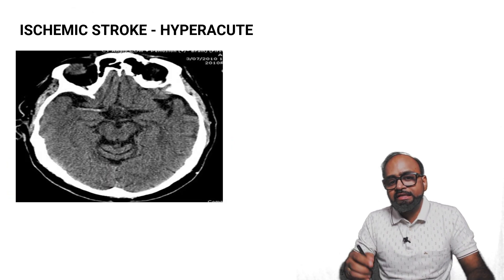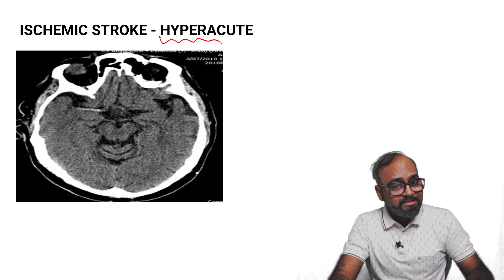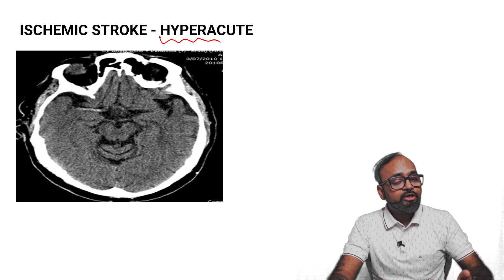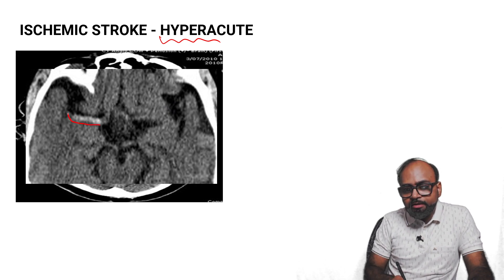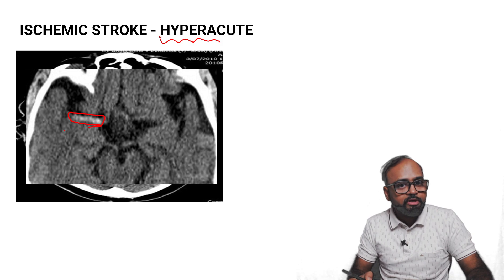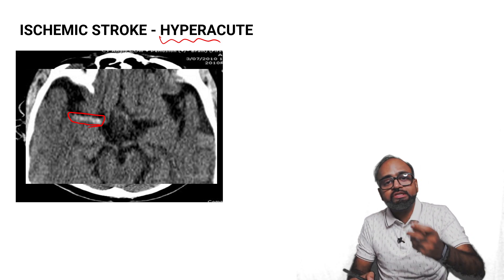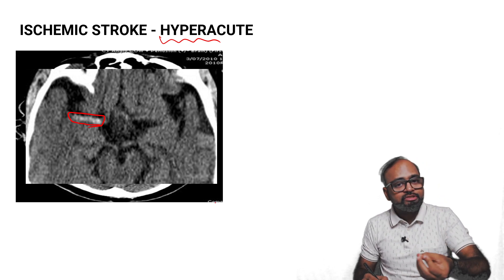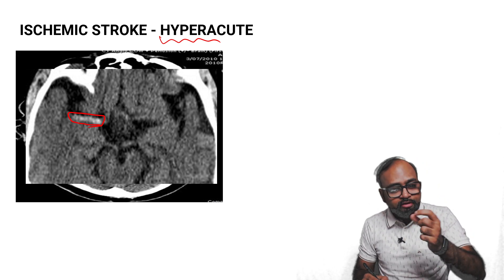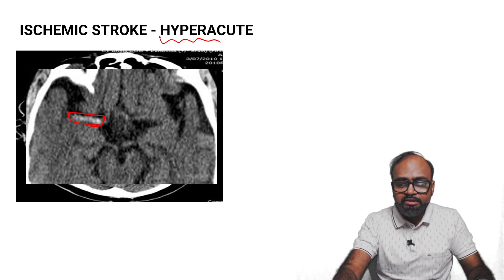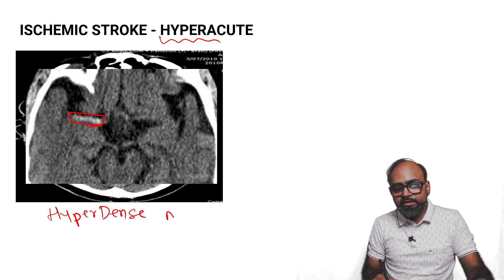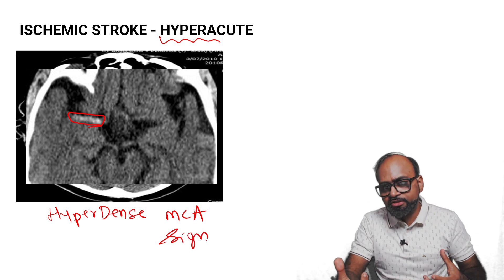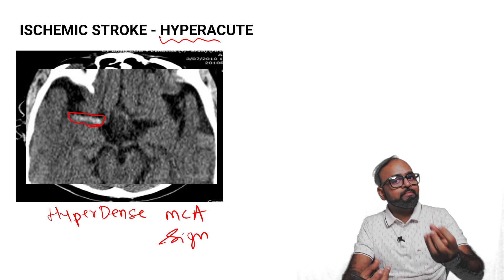In the early hyper-acute stage of an infarct — less than six hours — the parenchymal infarct might not yet be visible on CT scan. But what you can see is the right middle cerebral artery appearing hyperdense. Why? Because there is a blood clot within it, and that clot has a density greater than normal blood — therefore the MCA appears bright. This is called the hyperdense middle cerebral artery sign, one of the earliest signs seen on CT scan.